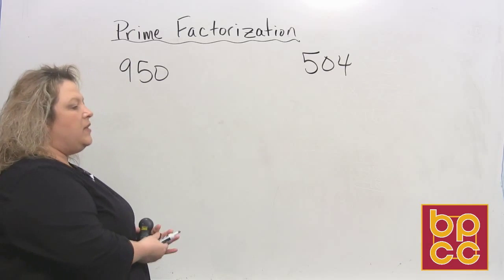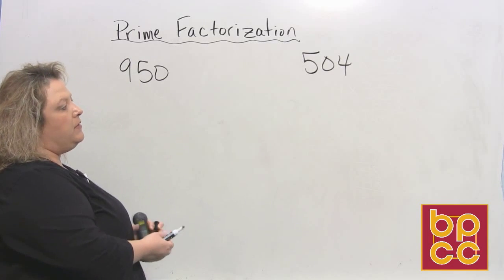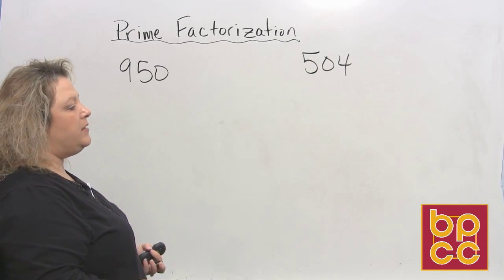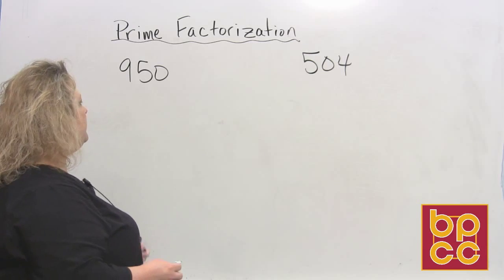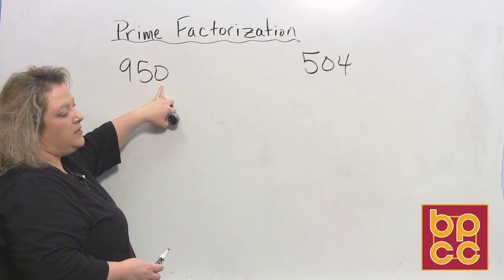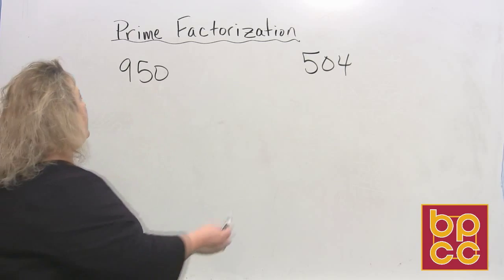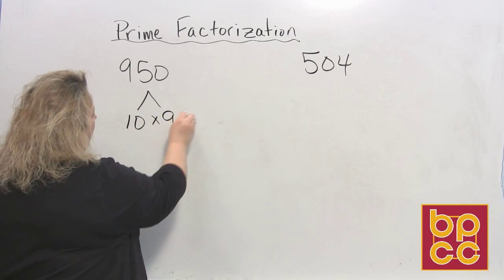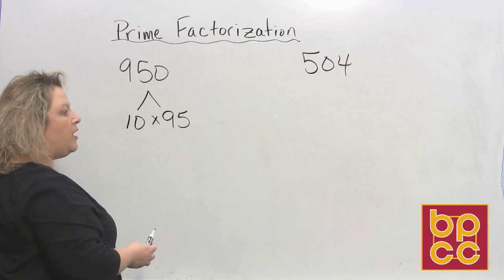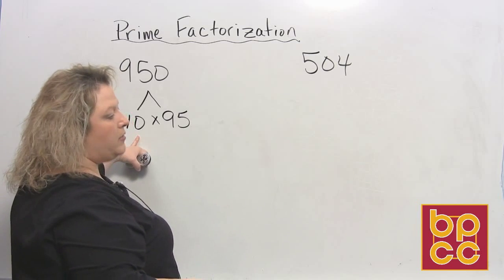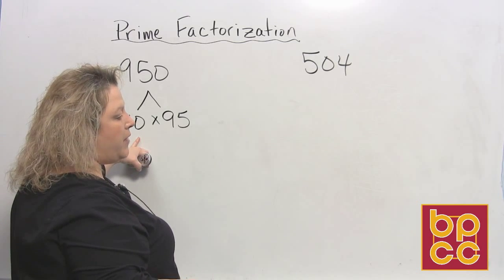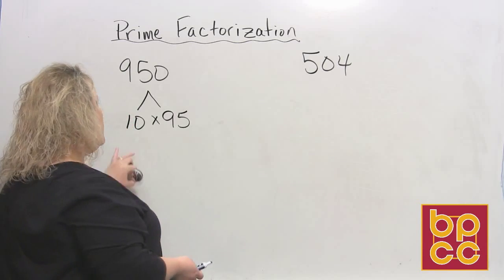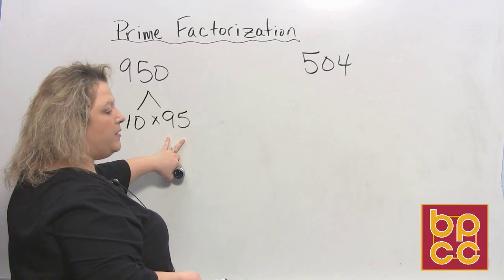Okay, the number 950. In the previous module we talked about rules that could help us figure out what divides into 950. One of the rules says if it ends in zero then 10 will divide into that number. So let's try that and say 10 times 95, because when you multiply with zeros at the end you do one times that number and then just add however many zeros you need to.